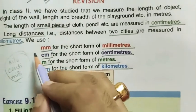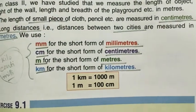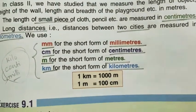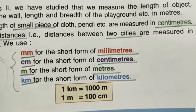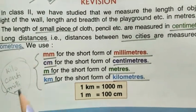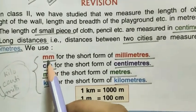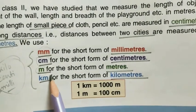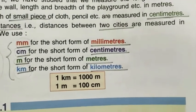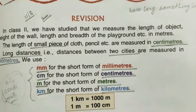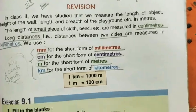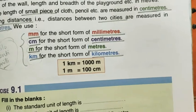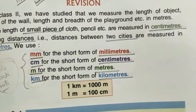Now there are some other units also. Millimeter is a smaller unit — millimeter is even smaller than centimeter. For measuring very small things we use millimeter. The short form is mm. Centimeter's short form is cm, meter's short form is m, and kilometer's short form is km.